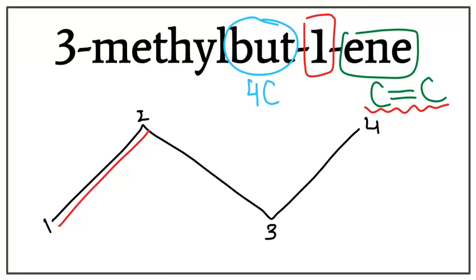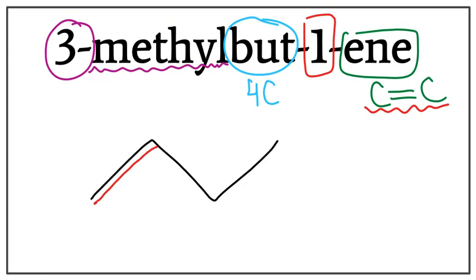There is also a methyl attached to the longest carbon chain. This methyl is attached on the third carbon, which is right here. Okay, so we're going to get rid of these numbers and we're going to attach the methyl on the third carbon. So this is the structure for 3-methylbut-1-ene or 3-methylbutene.